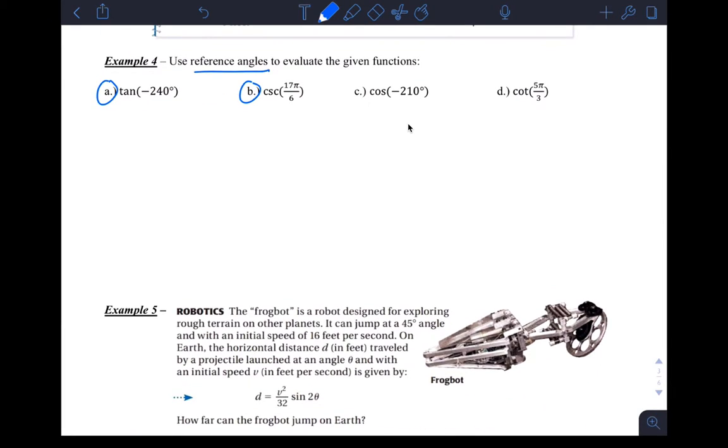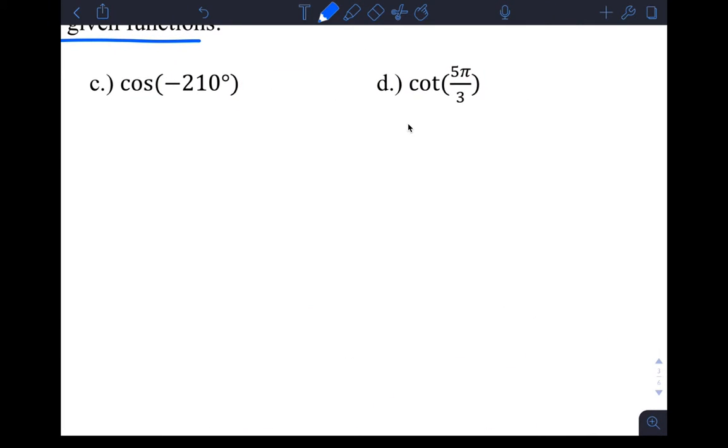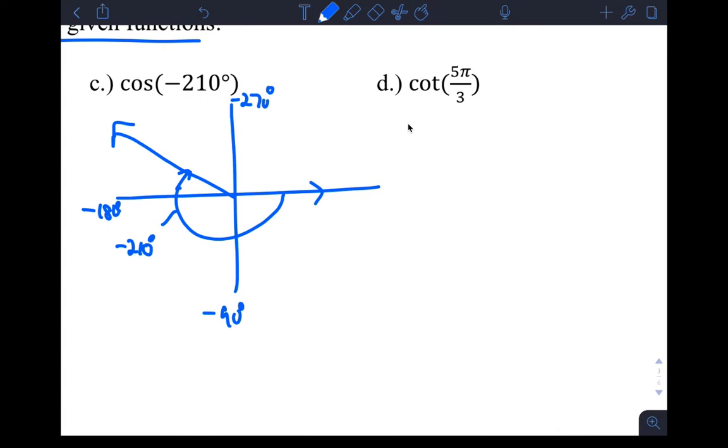This example says use reference angles to evaluate the given functions. So cosine of negative 210. I said maybe draw a picture to help yourself understand what's going on here. Remember negative angles are clockwise angles, so something like this, and if you go just past 180 about 30 degrees past 180, with this your initial side and then your terminal side in the second quadrant, then this angle can represent the angle negative 210 degrees.